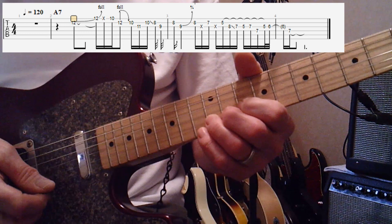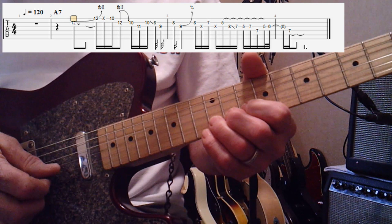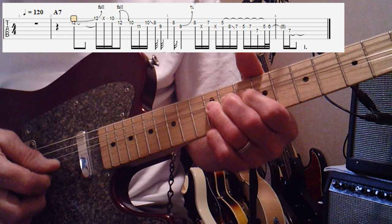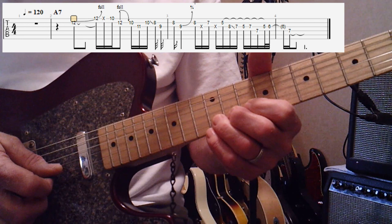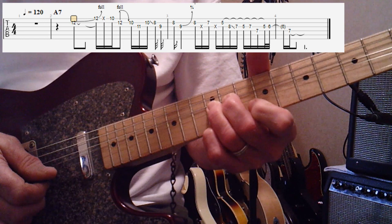This lick in the key of A's got some interesting bends going on. It starts up here at the 12th fret with a full bend on the B string, and then over on the E string 12 and 10. You keep that note bent up when you hit the E string 12th fret and when you hit the